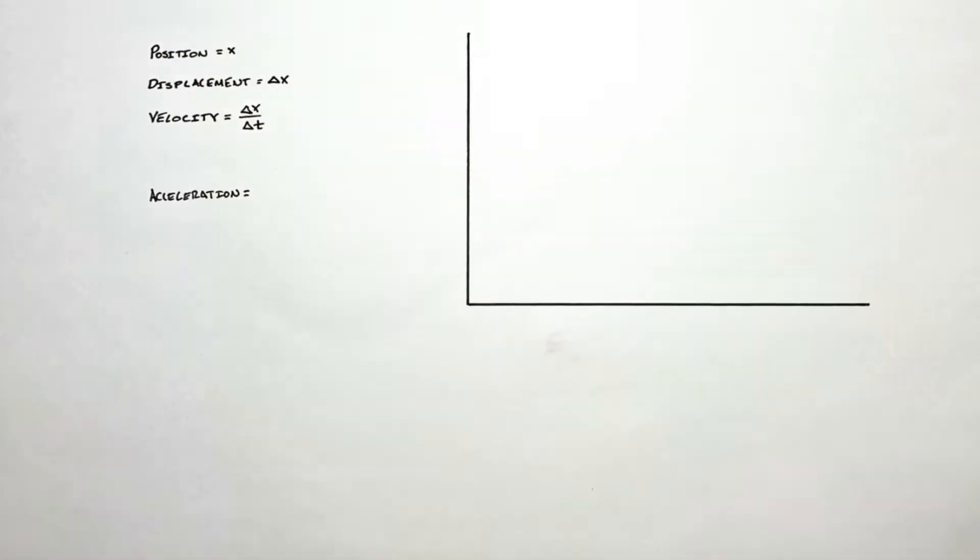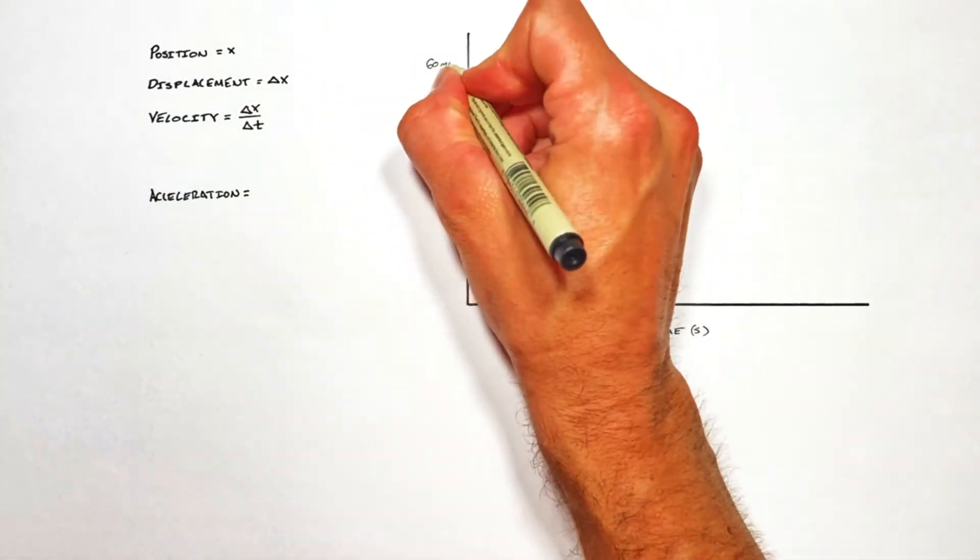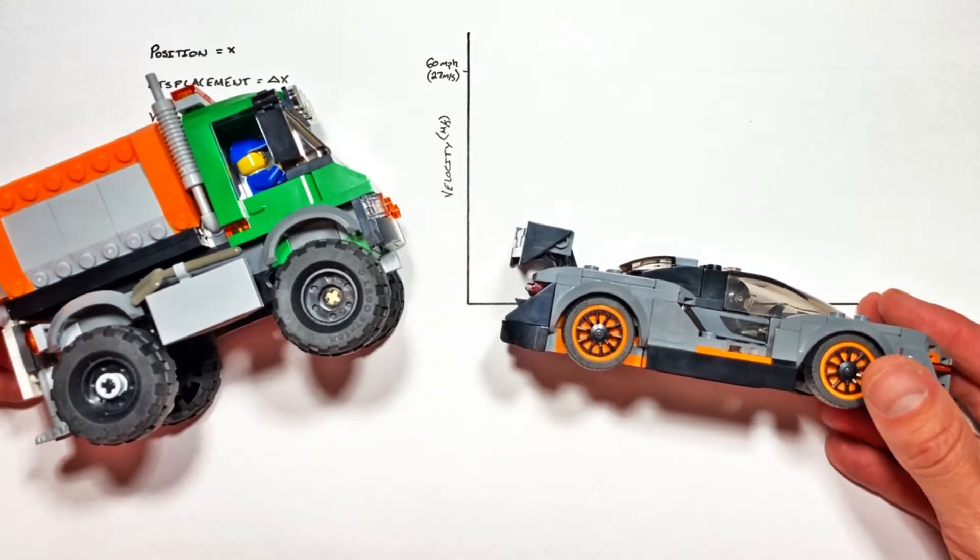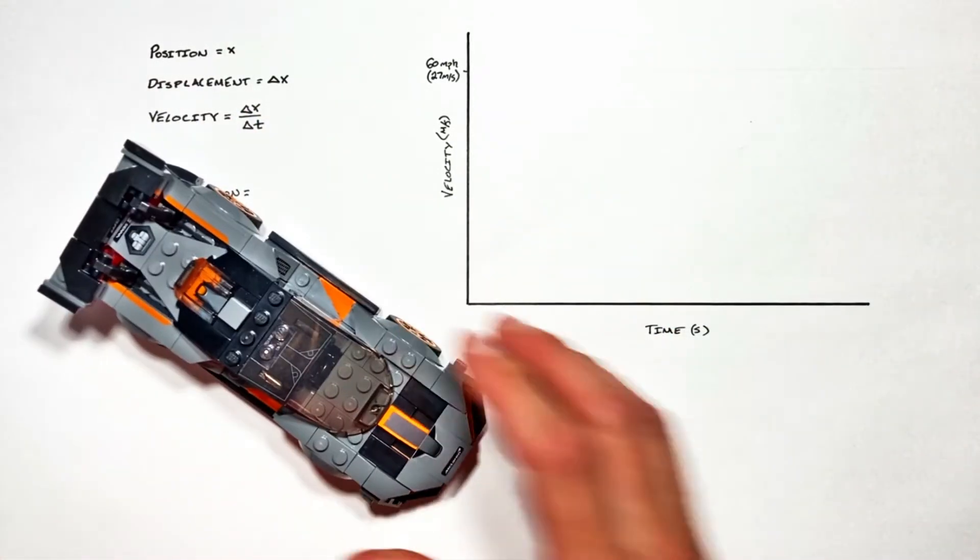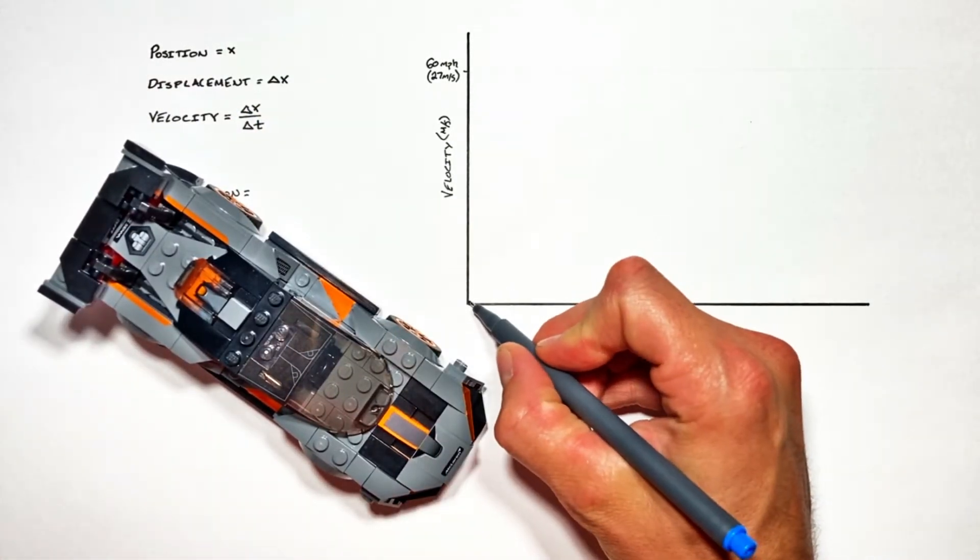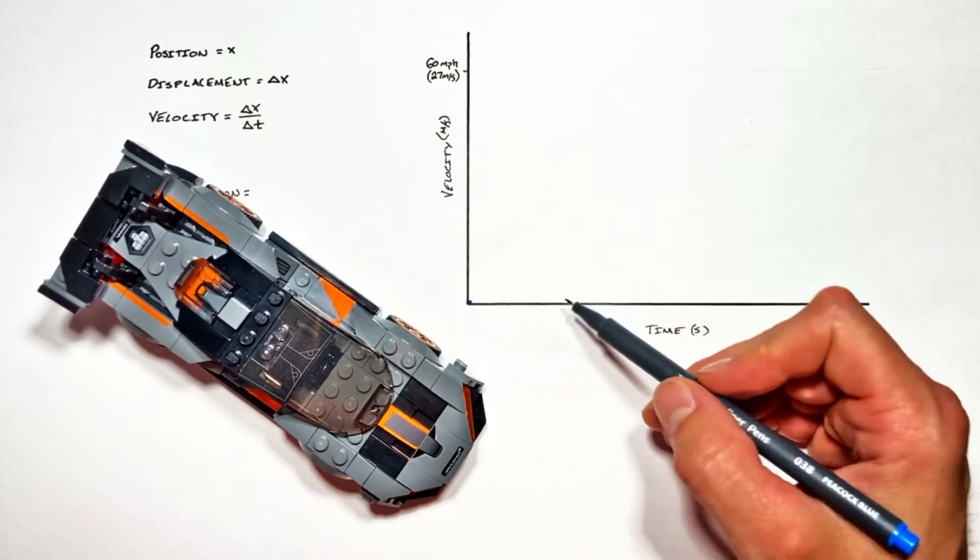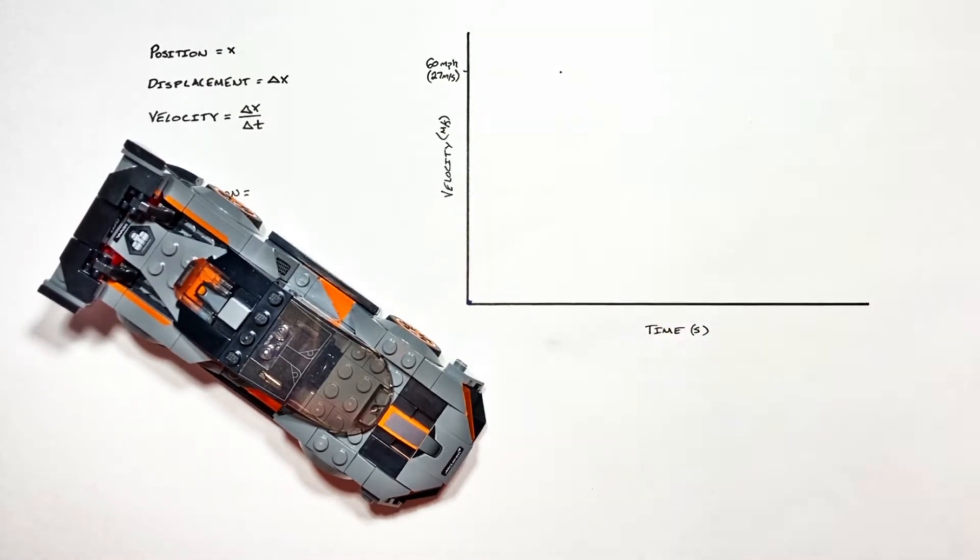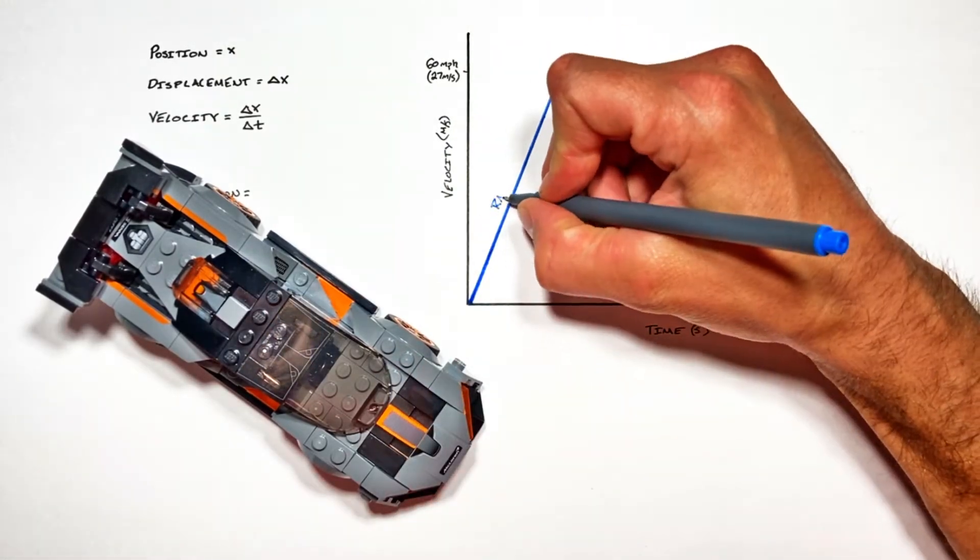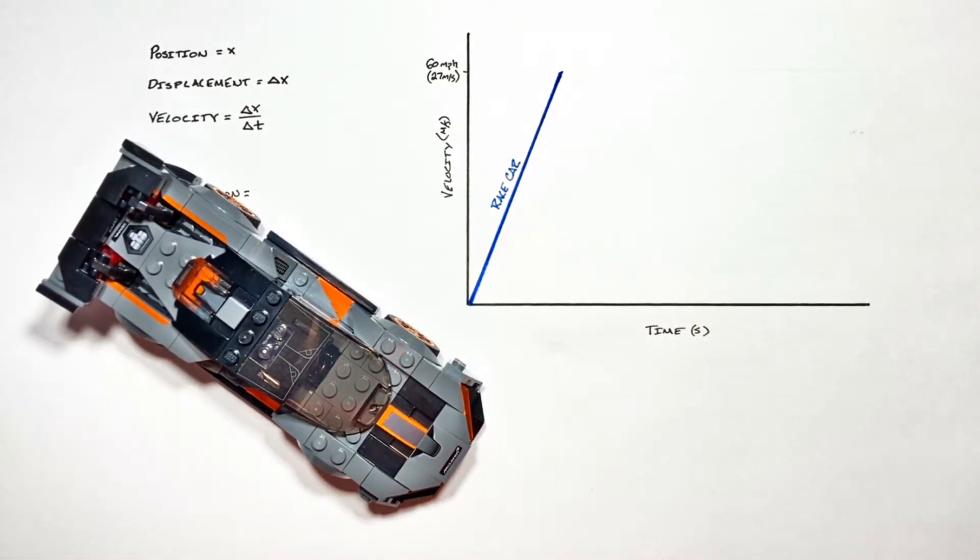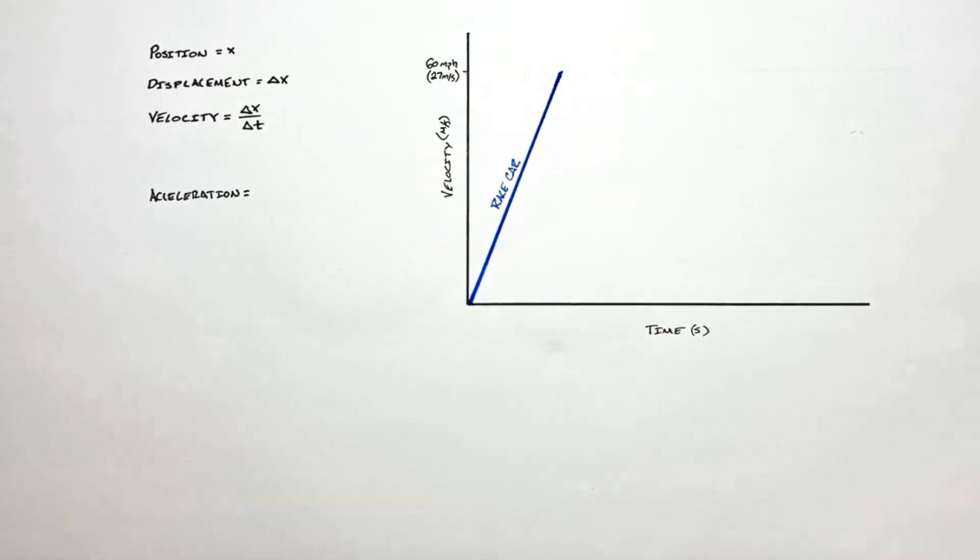If we were to graph the velocity of these vehicles as they speed up, both vehicles are going to go from zero to sixty miles an hour. It's just the car is going to do it a lot faster. The car is going to start at a velocity of zero and a short time later make it up to sixty miles an hour. The curve on our velocity versus time graph for the car is going to be relatively steep, meaning the car goes from zero to sixty pretty quickly.